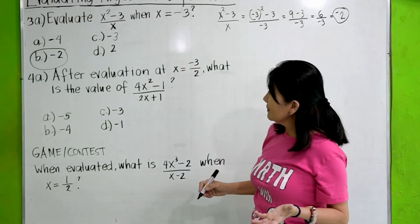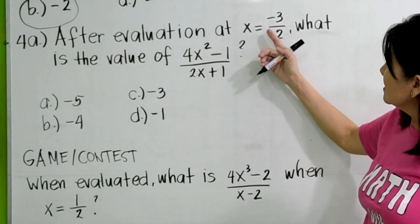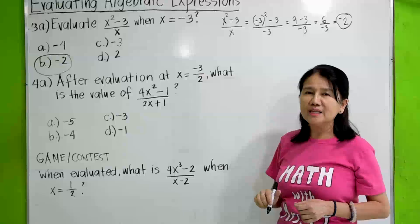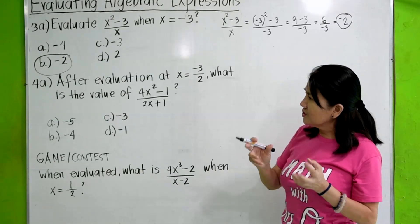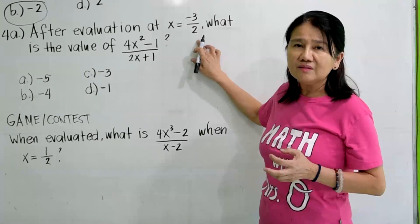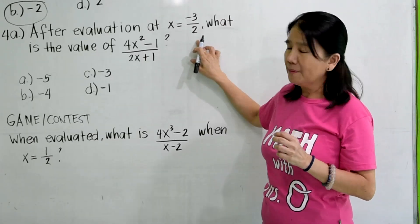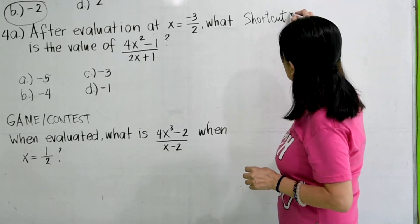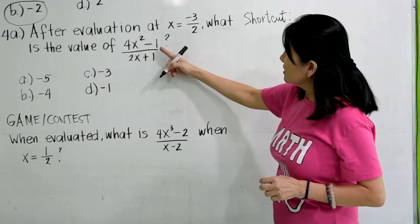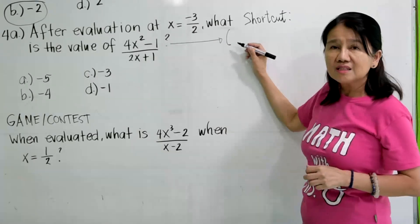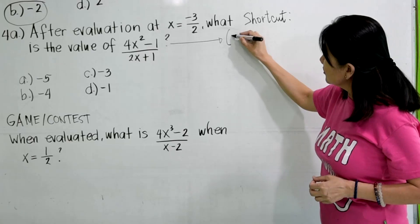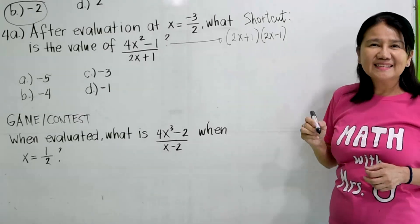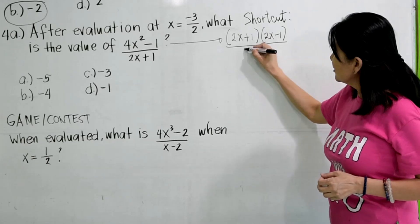Let's proceed to number 4. Now, after evaluation at x is equal to negative 3 halves, what is the value of 4x squared minus 1 all over 2x plus 1? Now, you can directly substitute the value of x which is negative 3 halves. But I'm going to show you first a shorter solution. The shortcut is this. You see that 4x squared minus 1 is factorable. So you can factor this as a difference of 2 squares. So the factors are 2x plus 1 and 2x minus 1, all over 2x plus 1.